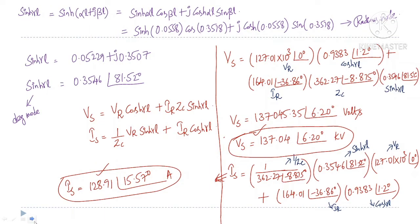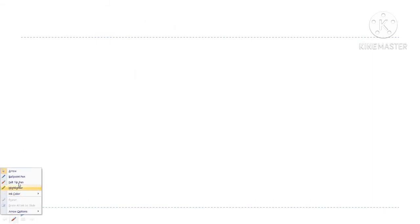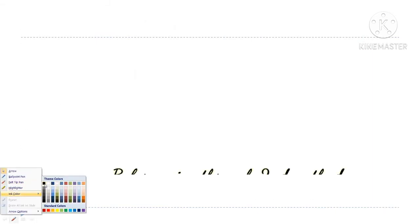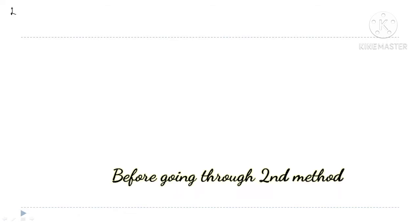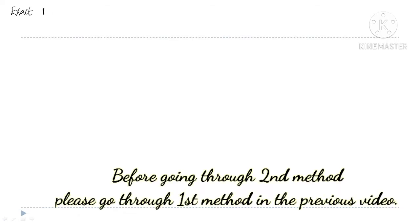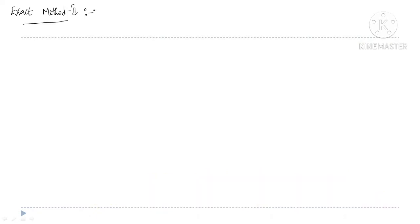We will go to the second method, which is using the exponentials. The second method is also an exact method — Exact Method 2. In this exact method 2, we will use the exponential relations of cosh(γl) and sinh(γl) to find their values.